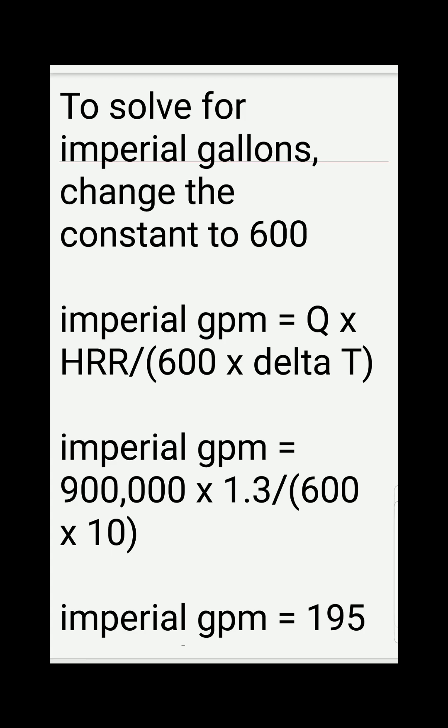Now for the second question, we solve for imperial gallons per minute. To do this, we change the constant in the main equation from 500 to 600. So imperial gallons per minute equals Q (cooling capacity) times HRR, divided by 600 times Delta T.